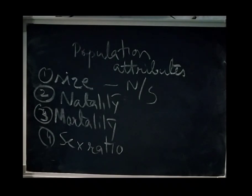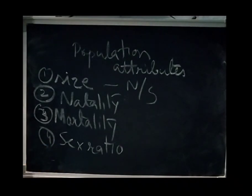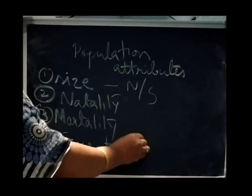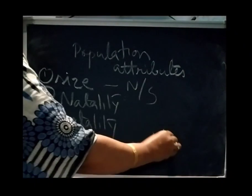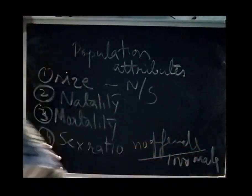Birth rate is the number of births of new individuals per unit of population per unit time. Mortality is the number of loss of individuals per unit of population per unit time due to death. Sex ratio is the number of females per thousand males in a population at a given time.